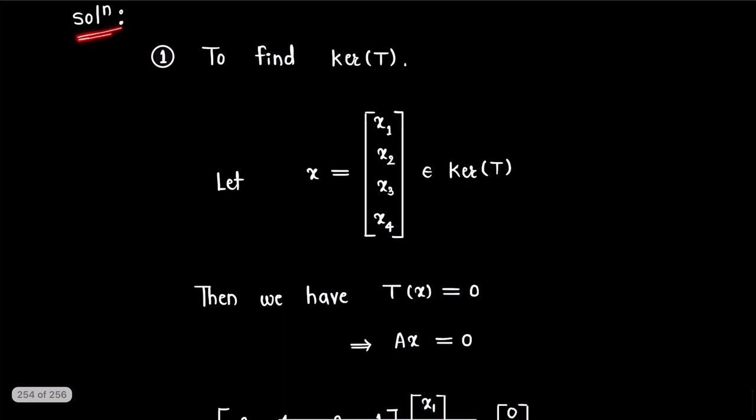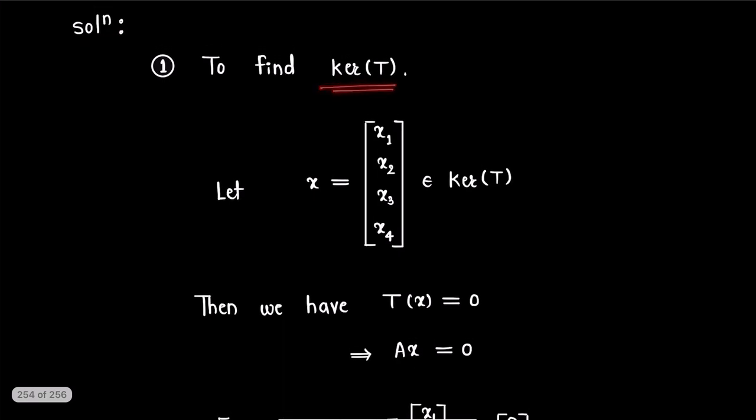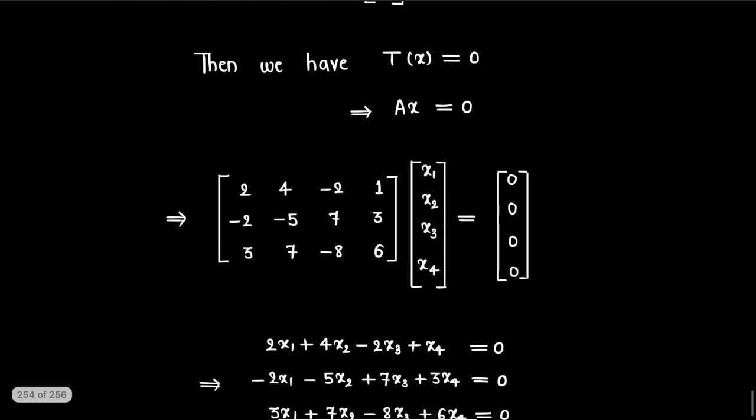Solution, firstly we will find kernel of the linear transformation T. For this, let us consider x is some arbitrary vector in kernel T. Then we have T(x) equals 0, which implies Ax equals 0. Now putting matrix A here, this vector x and this has 0 vector, we get this matrix equation.